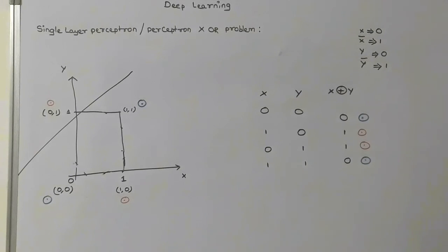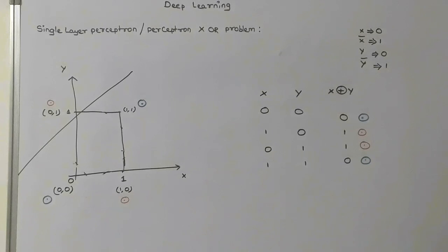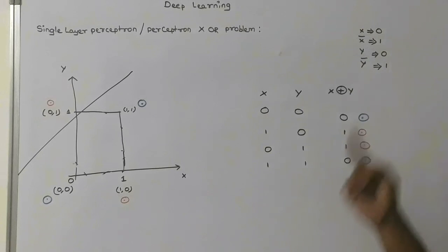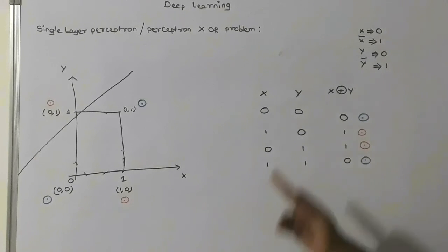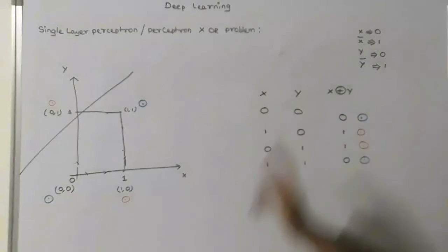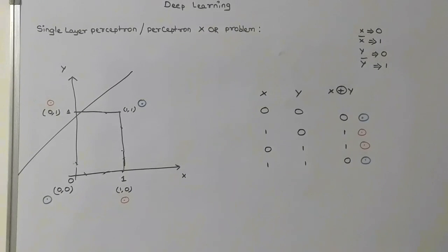If you want to understand the difference between linearly classified data and non-linearly classified data, you can see my earlier video — I am going to put that link in the description. So this is the main reason why the single layer perceptron model is not good for non-linearly classified data, and the XOR problem is one of the best examples to prove that. Thank you for watching.